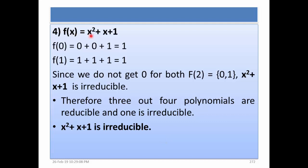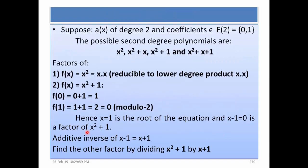Now we test x^2 plus x plus 1. Substituting both 0 and 1, we get 1 in both cases — we never get 0. Hence x^2 plus x plus 1 is irreducible. Therefore, 3 out of 4 polynomials are reducible and 1 is irreducible: x^2 is reducible, x^2 plus x is reducible, x^2 plus 1 is reducible, but x^2 plus x plus 1 is irreducible.